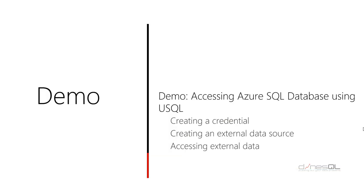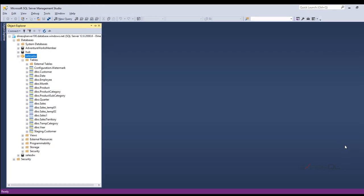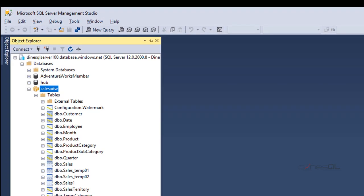Let's see how we can do all of these things with Azure Data Lake Analytics. I'll show you the way of creating credentials using PowerShell, then creating an external data source using USQL, and finally accessing external data using SQL select statements. Here is my environment — this is the Azure SQL Data Warehouse I have created with one of my Azure SQL servers. I'll be accessing this Sales ADW as my external data source.